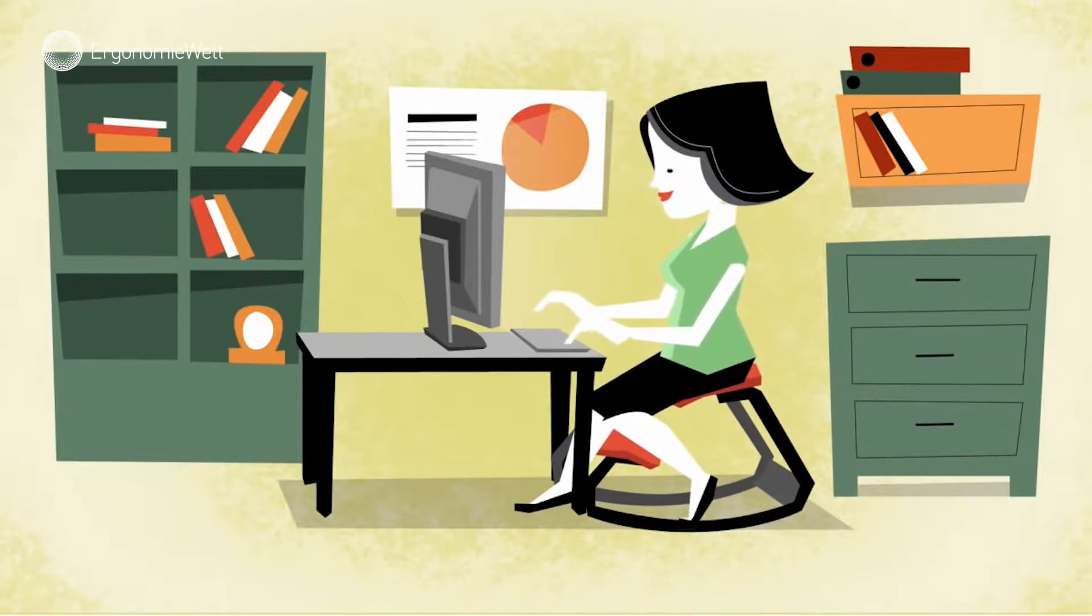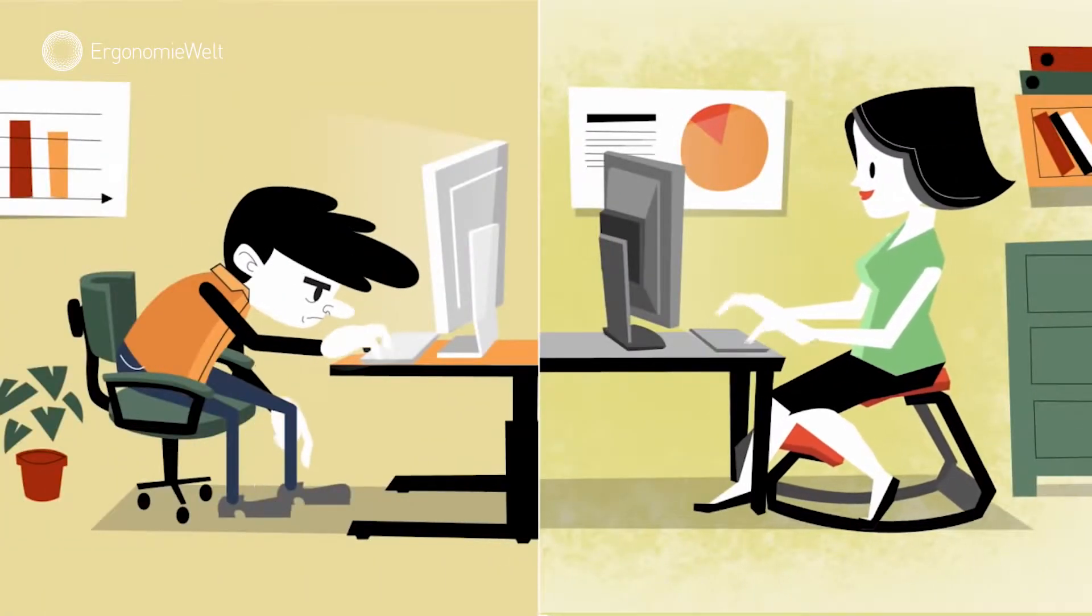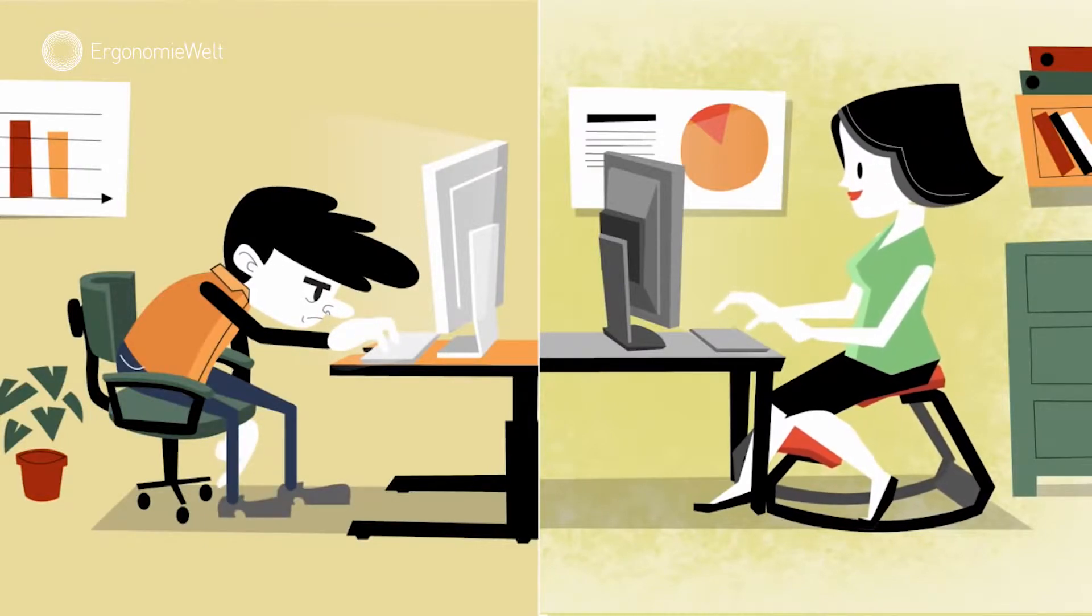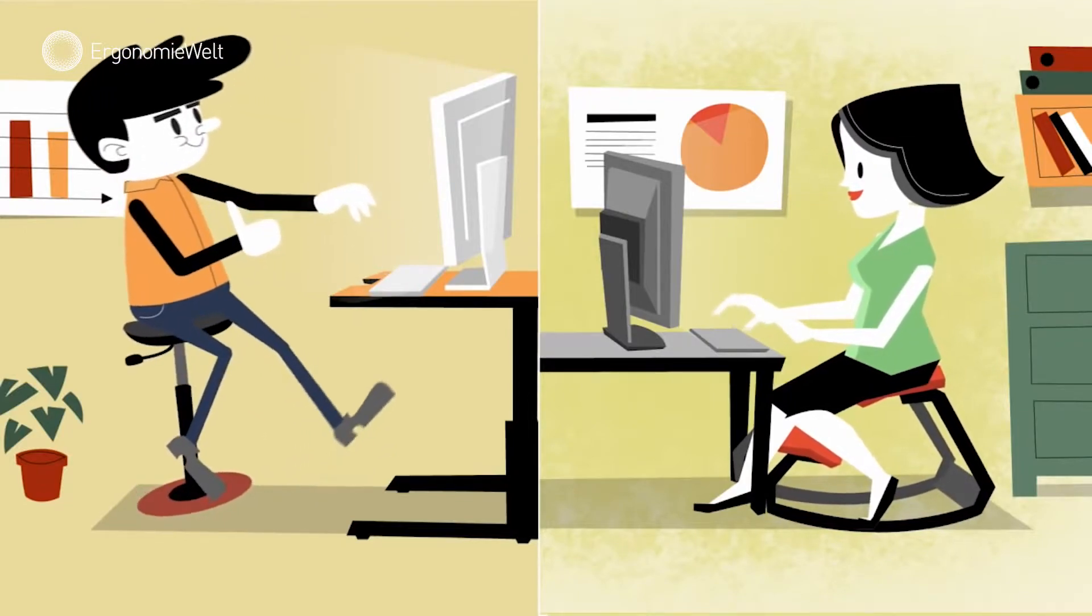Active sitting lets your body do more of the work. People naturally start fidgeting and shifting within 20 seconds of sitting, sometimes within seven seconds. So why not have a chair that moves with you?